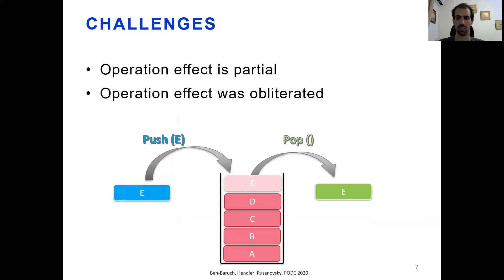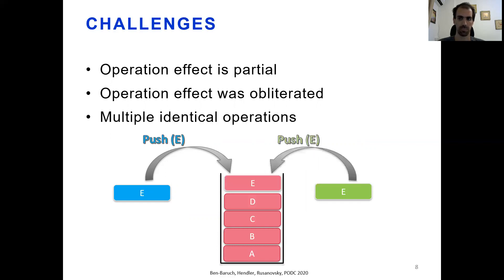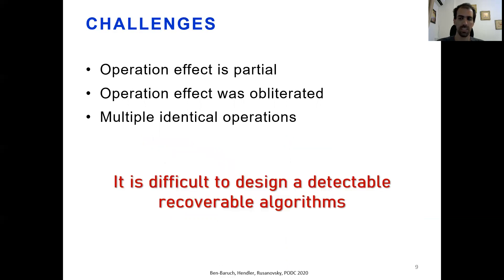Detectability poses more challenges. One of which is that an operation's effect may be obliterated. For example, if process P pushes an element to the stack which is then removed, in case of a crash, P cannot tell whether its push operation was completed by simply inspecting the state of the stack. Another problematic scenario is when two processes perform the same operation and only a single operation takes effect. In case of a crash, in order to return the right response, the two processes must agree upon recovery to which of them this operation is attributed.